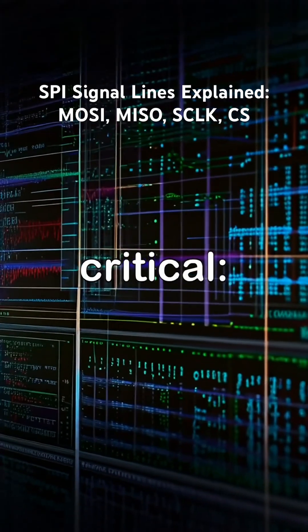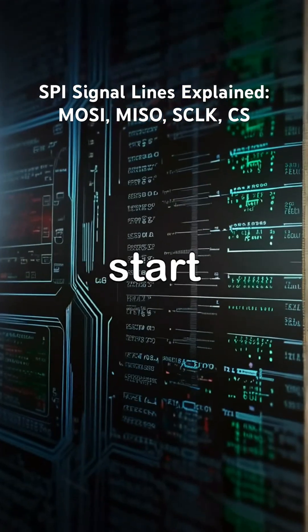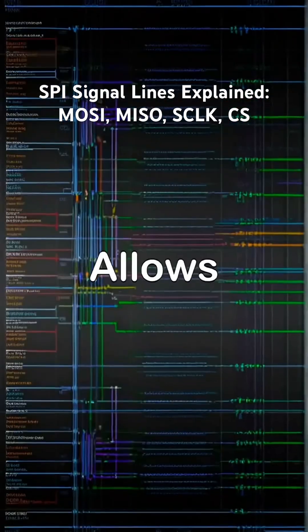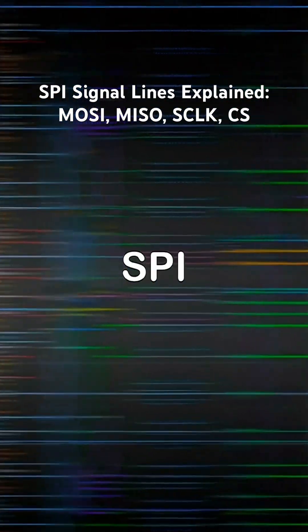CS is critical. It prevents bus conflicts on MISO, defines start and end of a transaction, and allows multiple slaves on the same SPI bus.